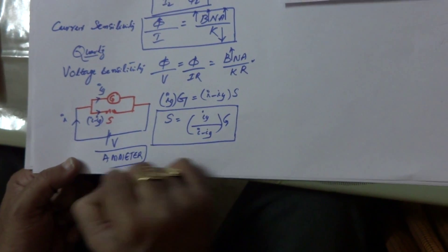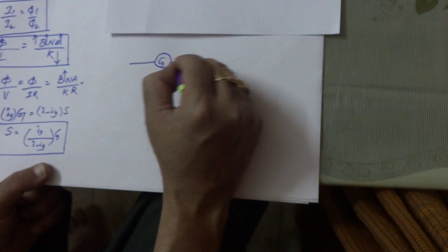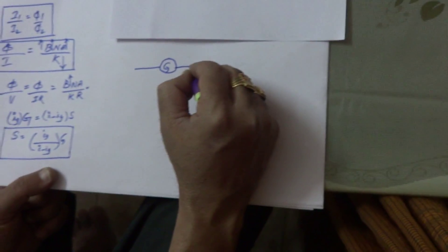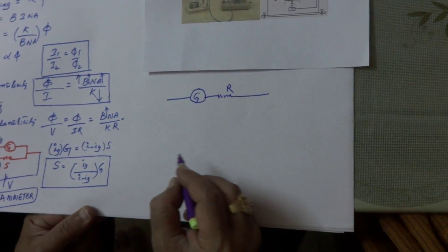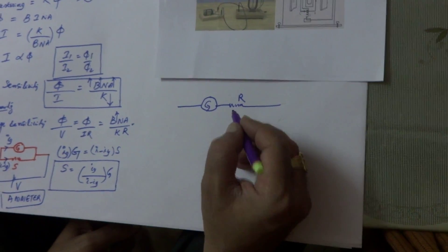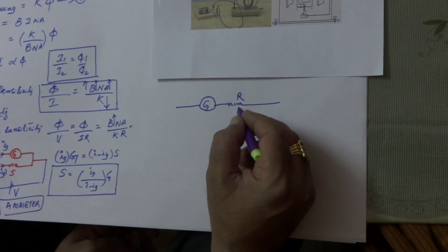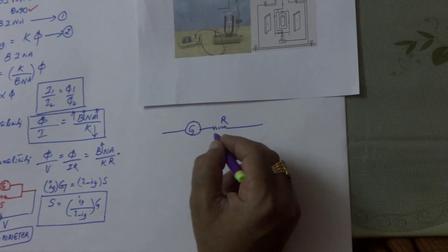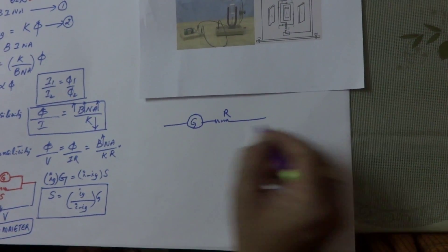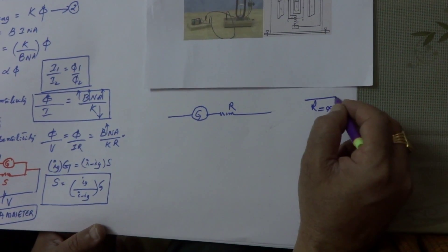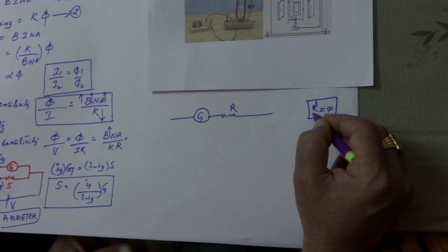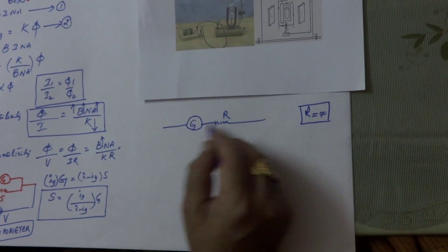Now, how does the ammeter work? The resistance for an ideal voltmeter is infinity, but for practical purposes we take that it should be very high compared to the circuit resistance.